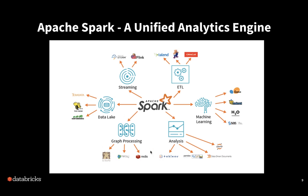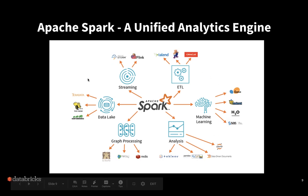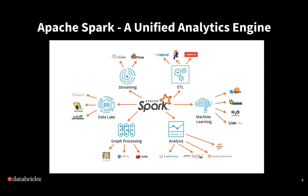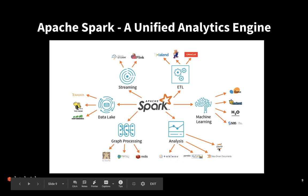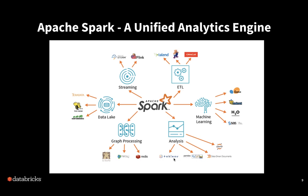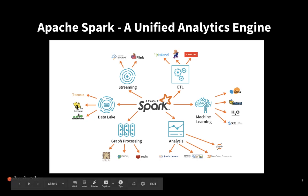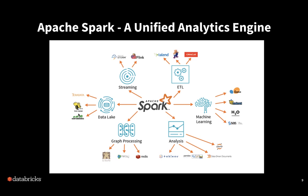If you look at the outside ring of this picture, this is the zoo of technologies that you would have to use if you weren't using Apache Spark. There's a zoo of different technologies that deal with ETL, a zoo for machine learning — Scikit-learn and SAS are very popular — and tools for business intelligence like Tableau, as well as Hive for building data lakes. What we've done with a unified data platform is the idea that you have one tool that can perform this entire lifecycle of doing all these different types of workloads.